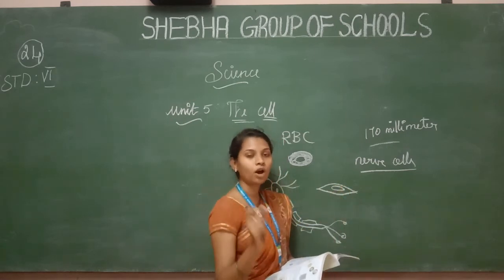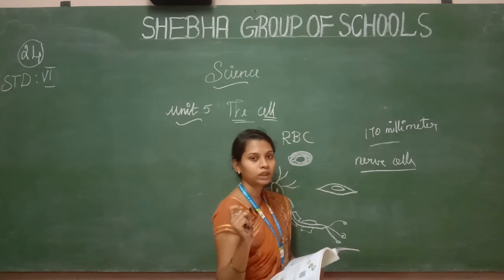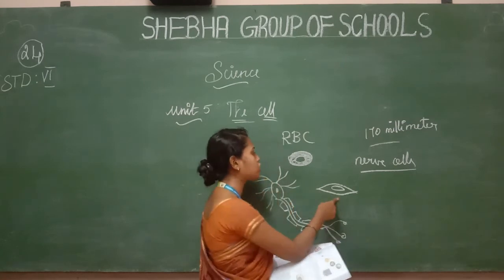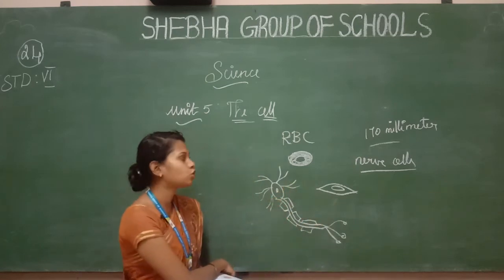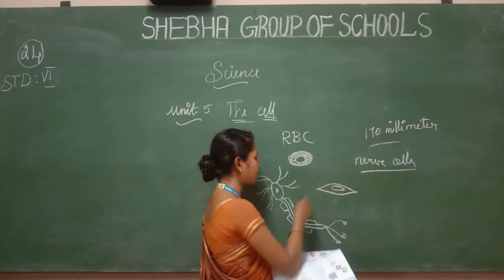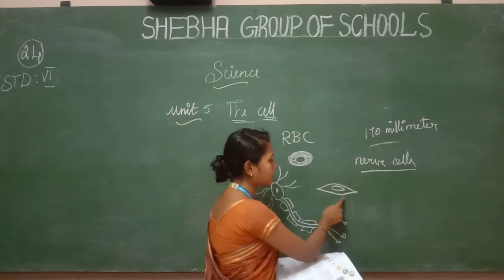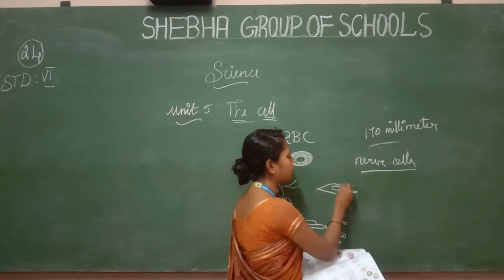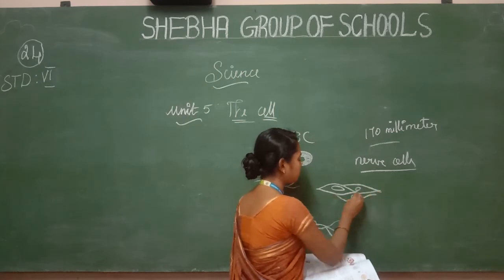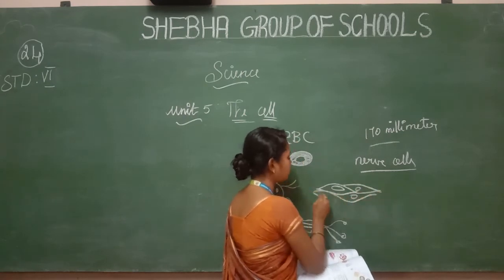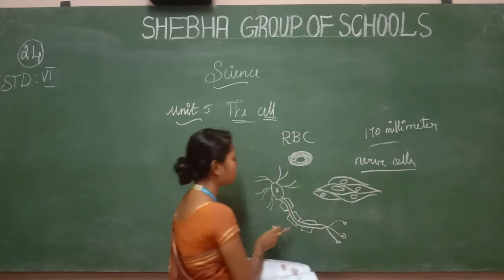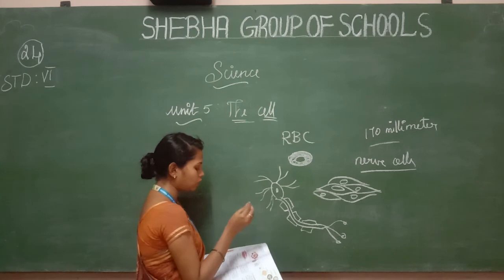In the human body, all cells are present in different types. RBC represents some of the largest cell types. Muscle cells are connected — the entire muscle cell is made up of interconnected cells.